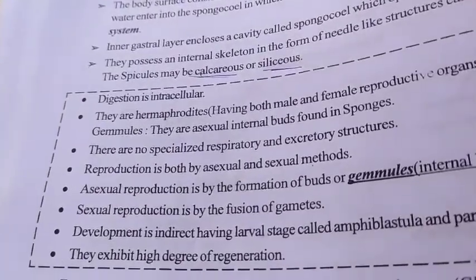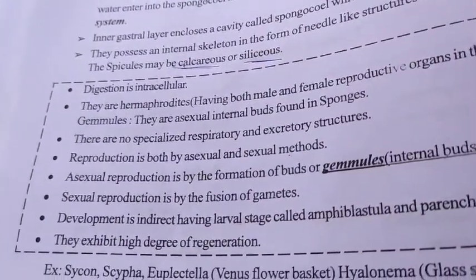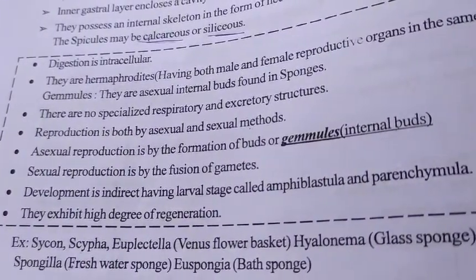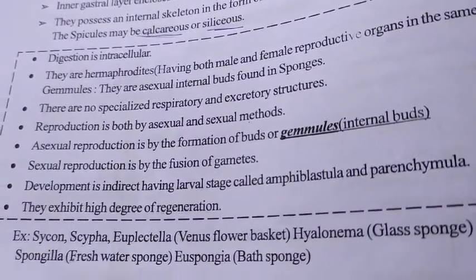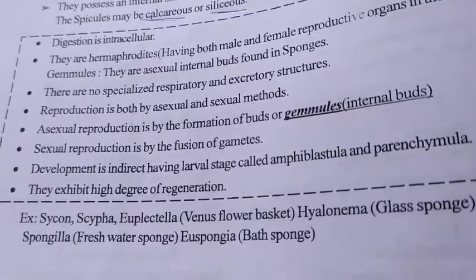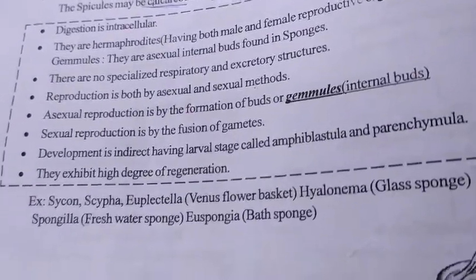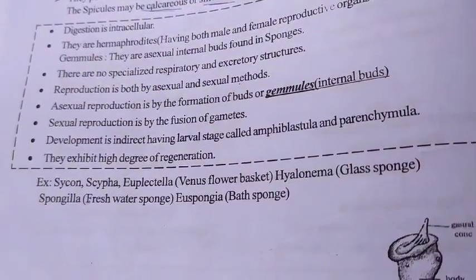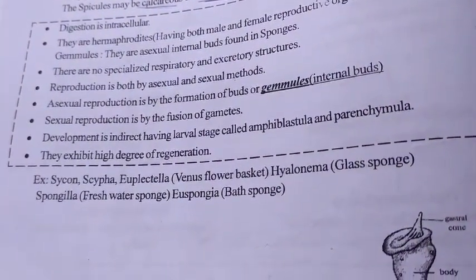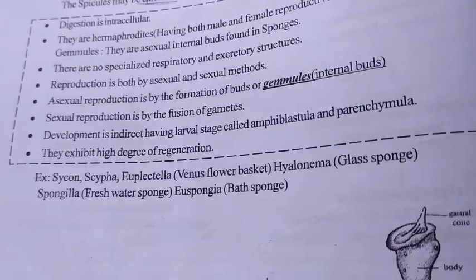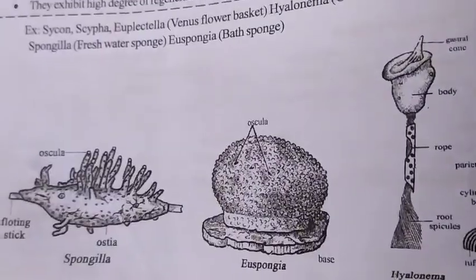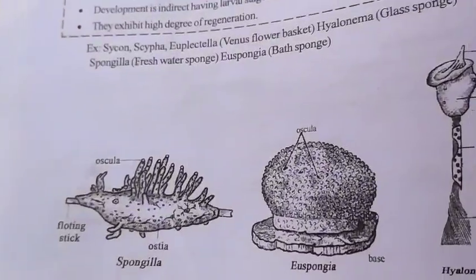Among other general characteristics, digestion is intracellular. Reproduction modes include asexual reproduction by gemmules and sexual reproduction by fusion of gametes. Examples of Phylum Porifera include Sycon, glass sponges, Venus flower basket, and bath sponges.